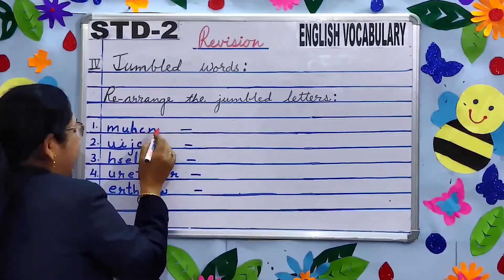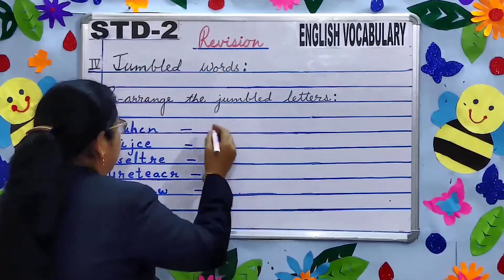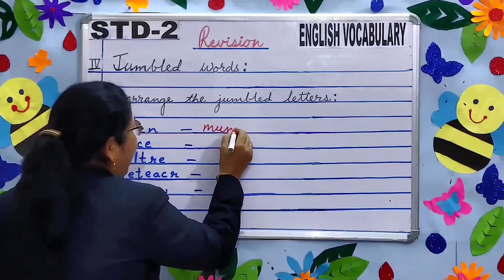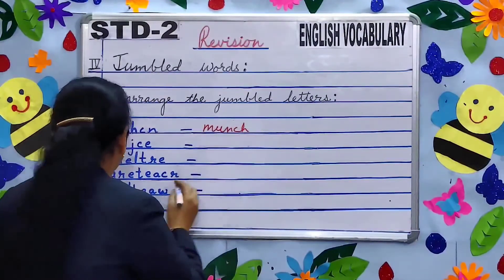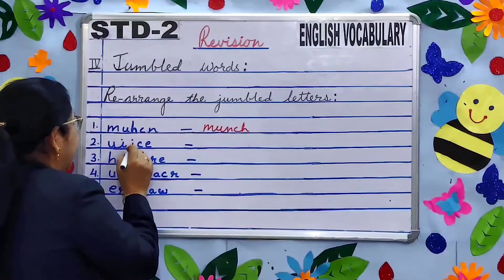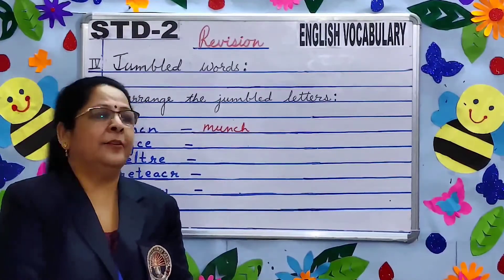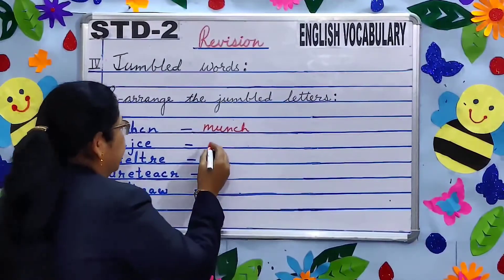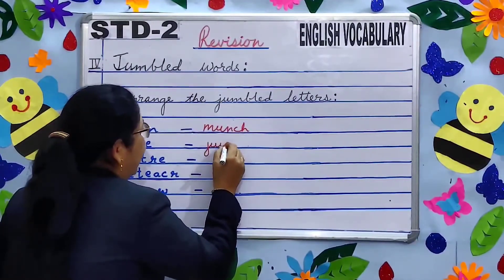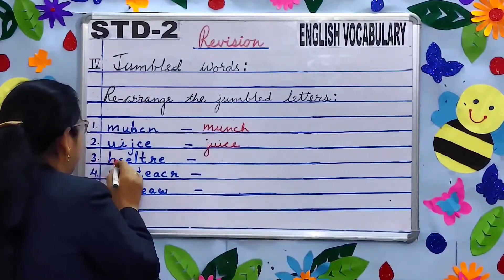Very good — 'munch', M-U-N-C-H. Number two: U-I-J-C-E — what is the correct word? Very good — 'juice', J-U-I-C-E.